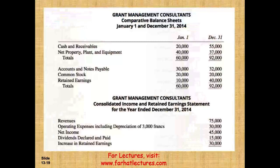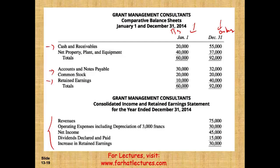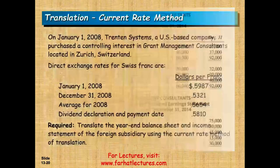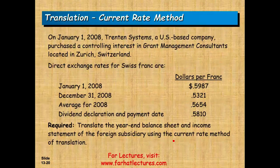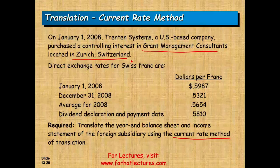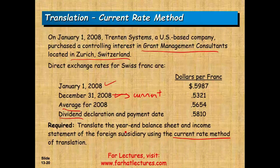The best way to illustrate this is to work an example. We have a two-year balance sheet — January 1st and December 31st — showing beginning and ending balances with assets, liabilities, equity, and an income statement in Swiss francs. On January 2018, a US-based company purchased a controlling interest in Grant Management Consulting located in Switzerland. Exchange rates given include the beginning of year rate, the year-end (current) rate, the average rate, and the dividend declaration and payment date rate.